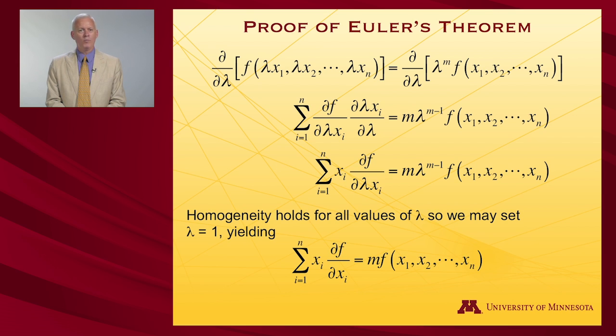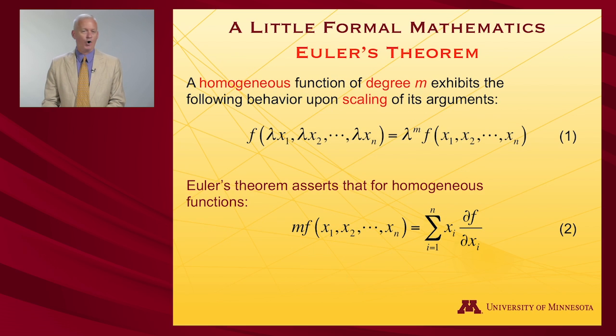What I want to talk about is what Euler determined for homogeneous functions. A homogeneous function of degree m exhibits the following behavior when you scale its arguments. If you have some function of a variety of variables—x₁ through xₙ—and I scale them all by some constant λ, a function is homogeneous if the value the function takes on is equal to λᵐ times the values of the function with the unscaled variables. m can be any power: 0, 1, 2, 3, what have you. That defines a homogeneous function of degree m.